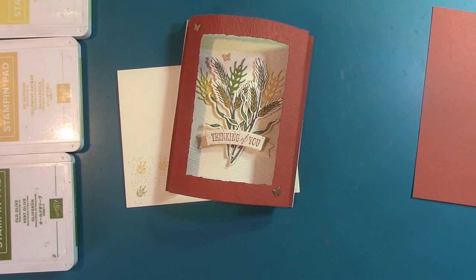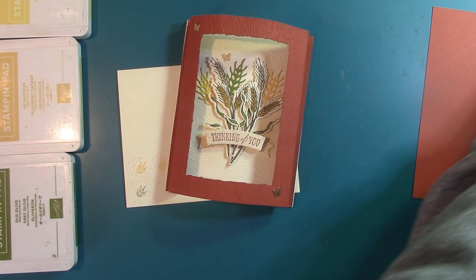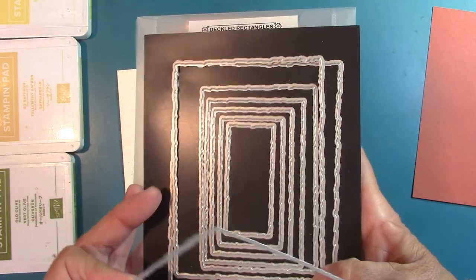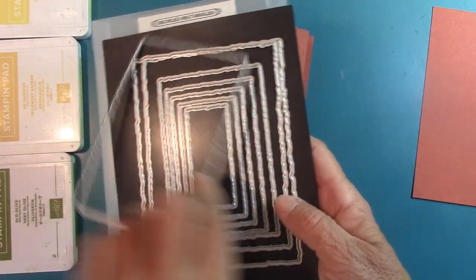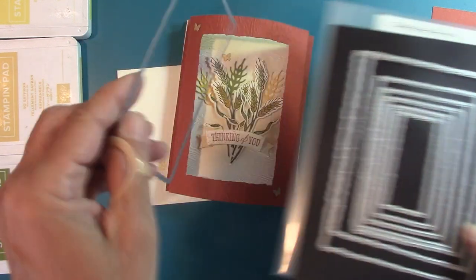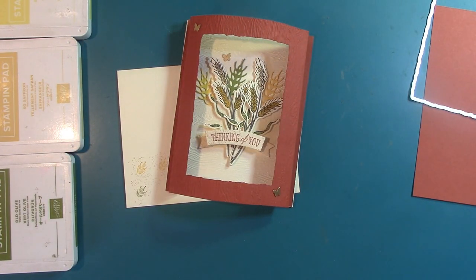I absolutely love these deckled rectangles. I want to show this to you. They are just kind of crinkly around the edges, I don't know what to call them, but I use the third one from the outside to make my window here. So we'll be using that in just a moment.